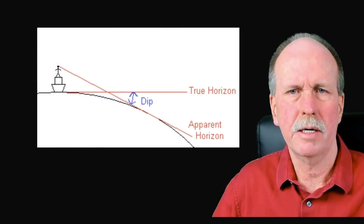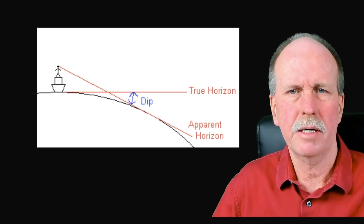Next, we had a look at angles. The first question asked whether the angle to the horizon changed based on the direction you were looking — say you were on a ship 10 meters off the water. Would the angle down to the horizon change depending on what direction you were looking? It does not, and they seemed to understand that reasonably well.